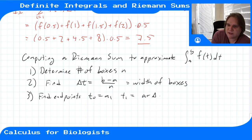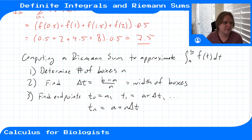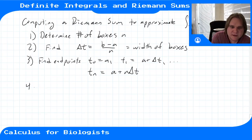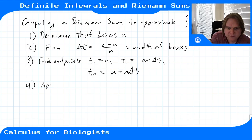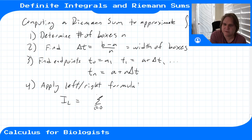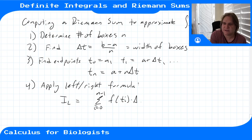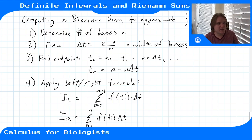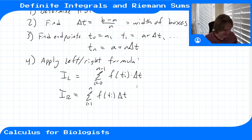Step 3 — find the endpoints of the boxes: t_0 = a, t_1 = a + delta t, and in general t_n = a + n·delta t. Step 4 — apply the left or right formula: for left, use the sum from i = 0 to n−1 of f(t_i)·delta t; for right, use the sum from i = 1 to n of f(t_i)·delta t. You could also use both.